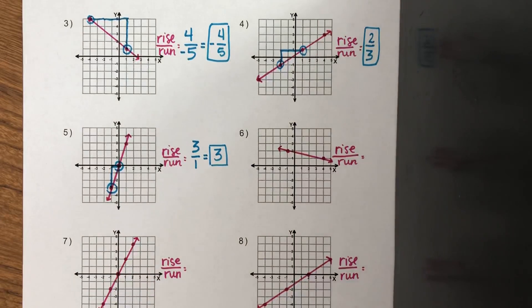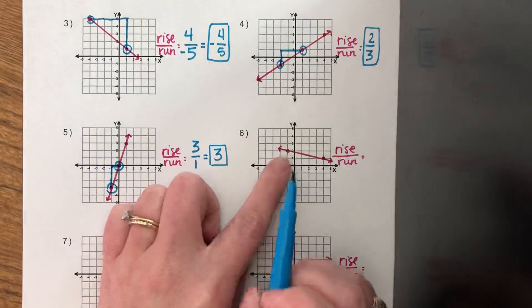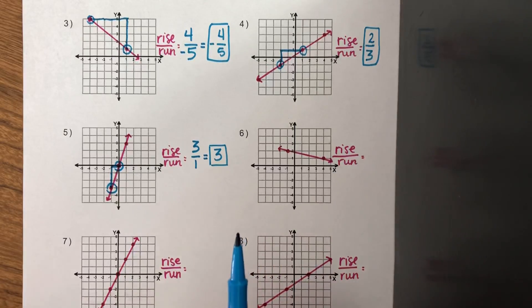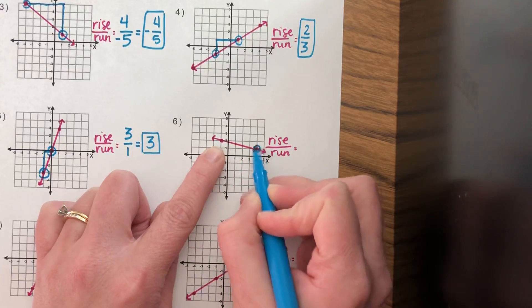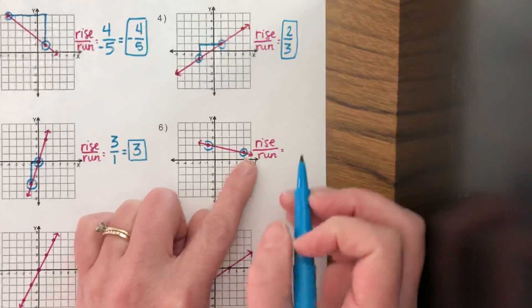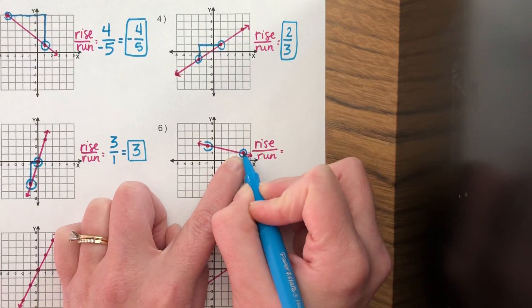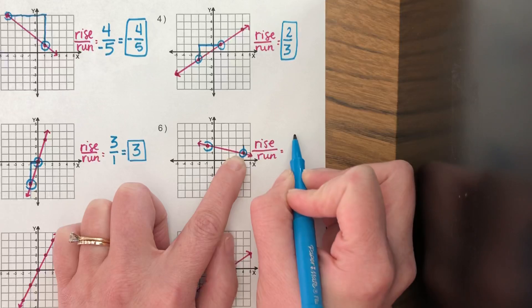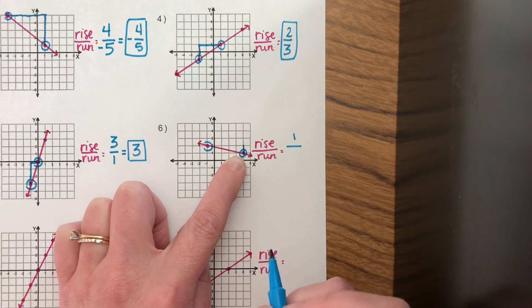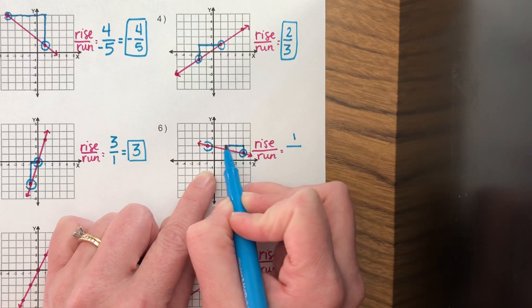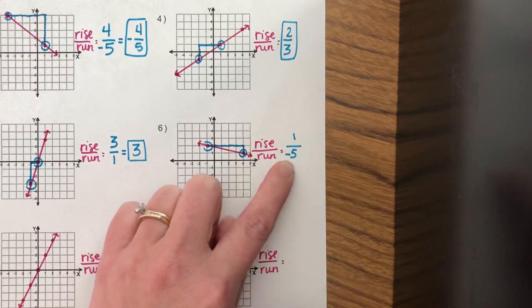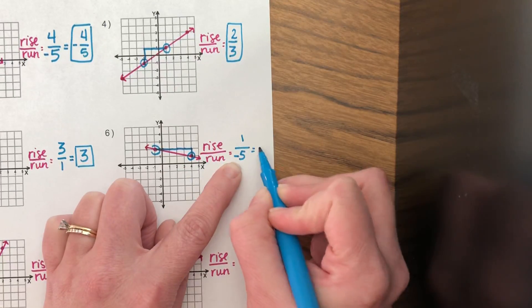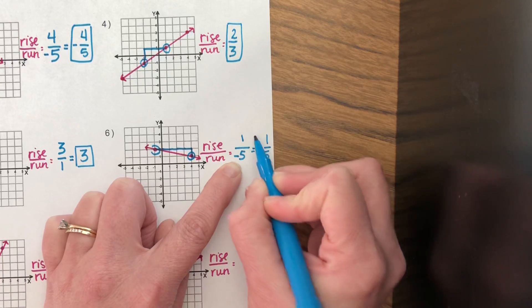Number six — is it positive or negative? Number six is negative; this graph is going down, so I know my slope is going to be negative. I'm going to pick two of the closest points — I actually only see two points this time. I start at the bottom. To get from the bottom to the next one, I went up one. Up is a positive movement, so my rise is one. I went one, two, three, four, five to the left. Left is a negative movement, but it's not the five that's negative — it's the whole thing.